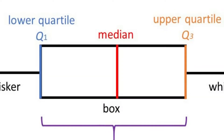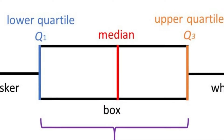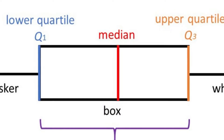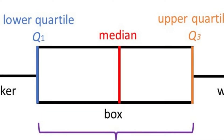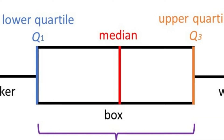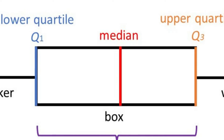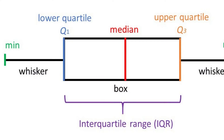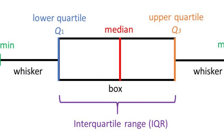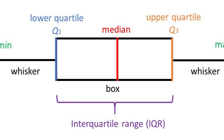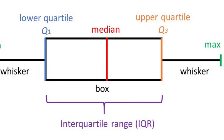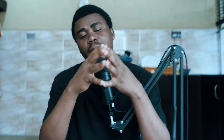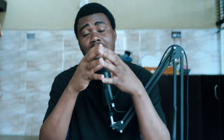Inside the box we have three lines. The first line on the left represents the first quartile, the second line represents the median, and the third line represents the third quartile. The first whisker represents the minimum value and the last whisker represents the maximum value.